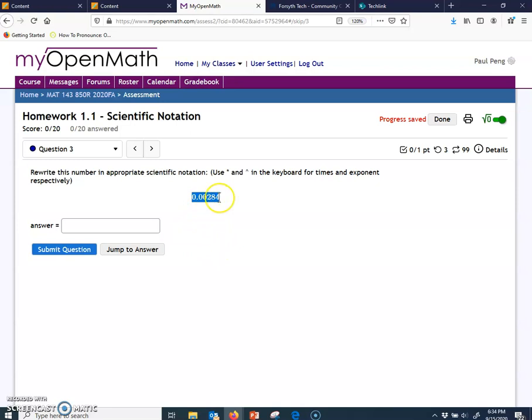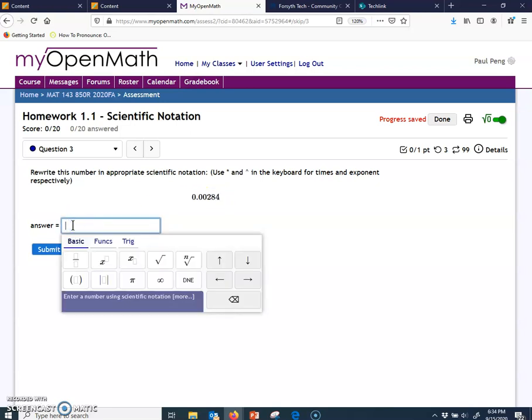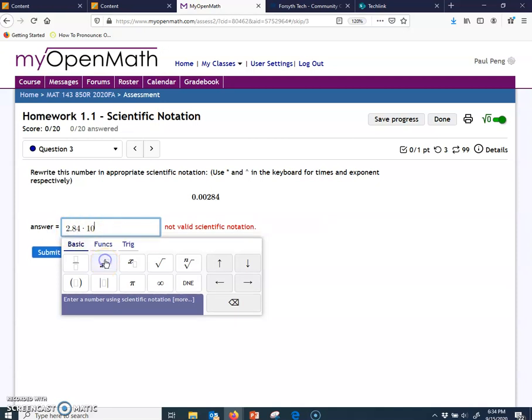So we're going to the answer box. First the 2.84. And then what you do? Shift number 8. Star. And then 10 raised to now directly click this button. Then it goes to what? It goes to negative 3.